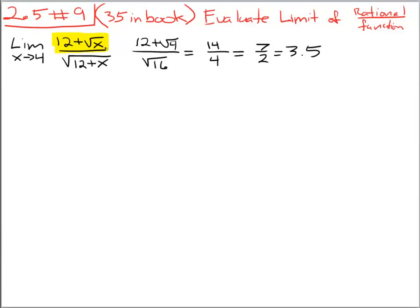That function is going to be continuous for all values of x that don't mess up our radical. What are our rules for radicals? We just can't have negative numbers in the radical. This thing is going to be continuous on the interval 0 to infinity.